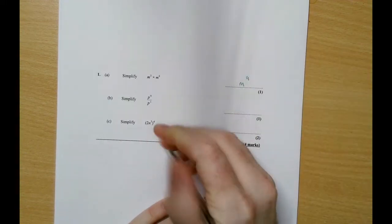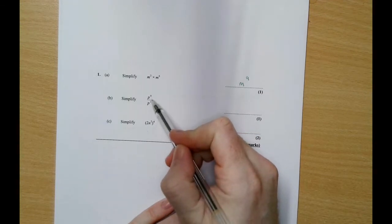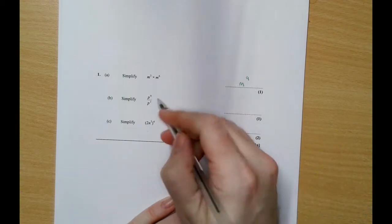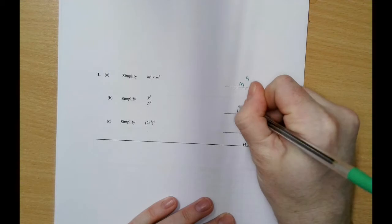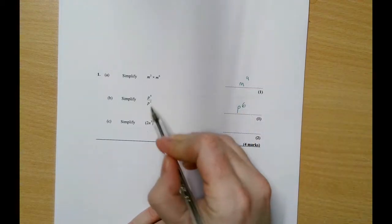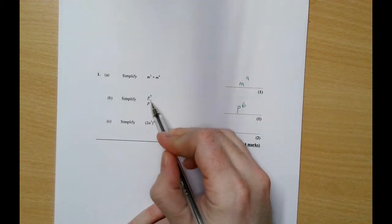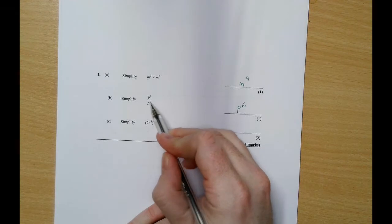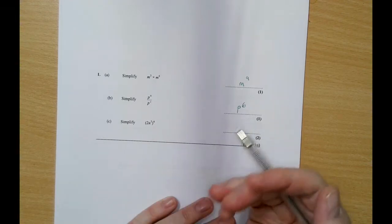The next one underneath, if we're multiplying and adding the indices together, then we must be subtracting here. So it's p to the power of 6. But people will commonly think 8 divided by 2 is 4 because it's under a divide sign, but when it's indices it's slightly different.